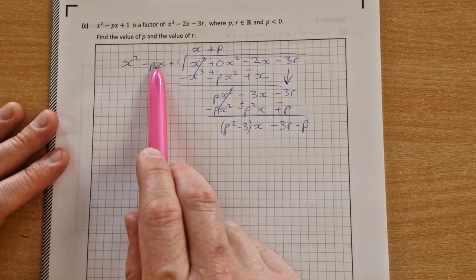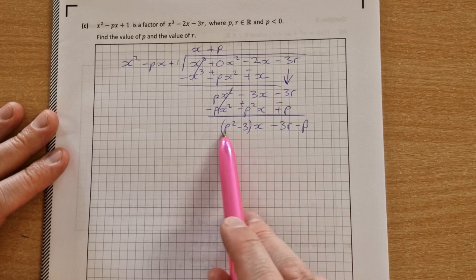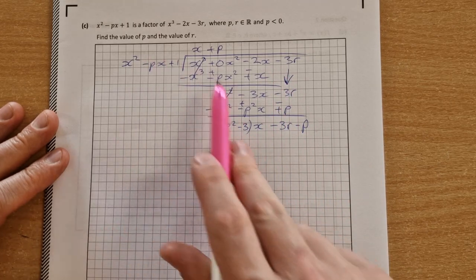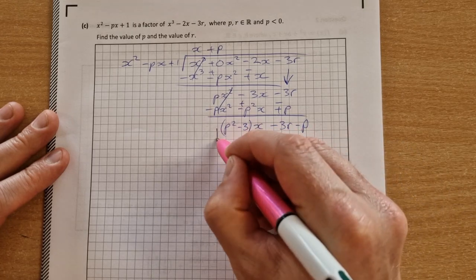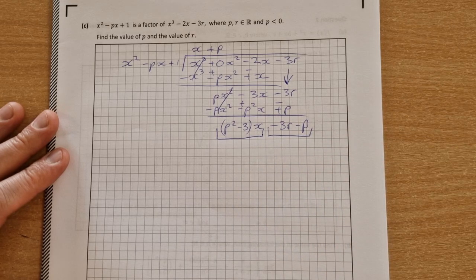Now we're told that this is a factor, so if we did our long division and we did it properly, we should usually get 0 down here. So let's assume that we did it properly, this should be equal to 0, what we do is we let the first part equal to 0, and then we let the second part equal to 0, and we solve.